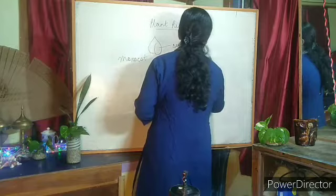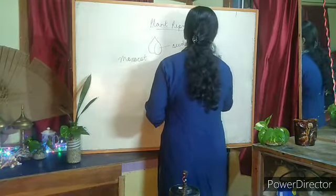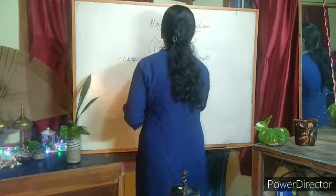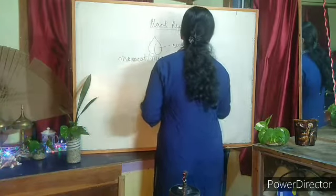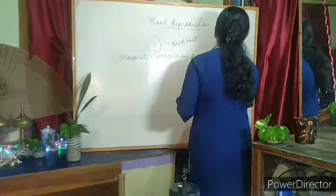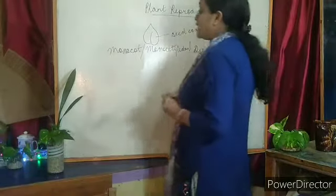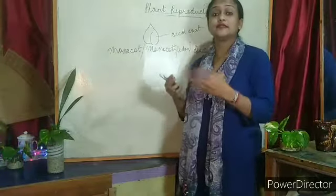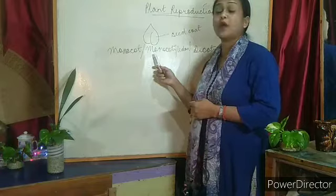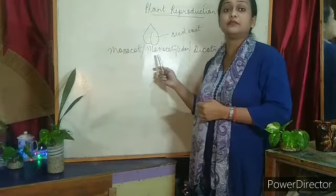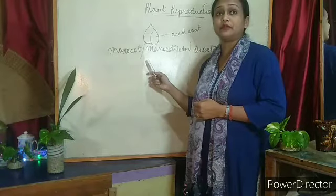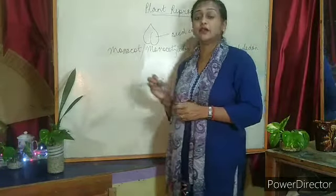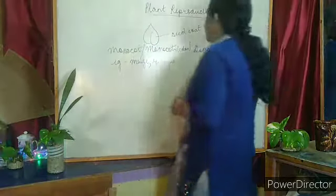One is monocotyledon and the other is dicotyledon. The plants which bear seeds having one cotyledon are called monocotyledon plants, or monocot. For example, wheat, maize, and paddy — all these are examples of monocot plants.